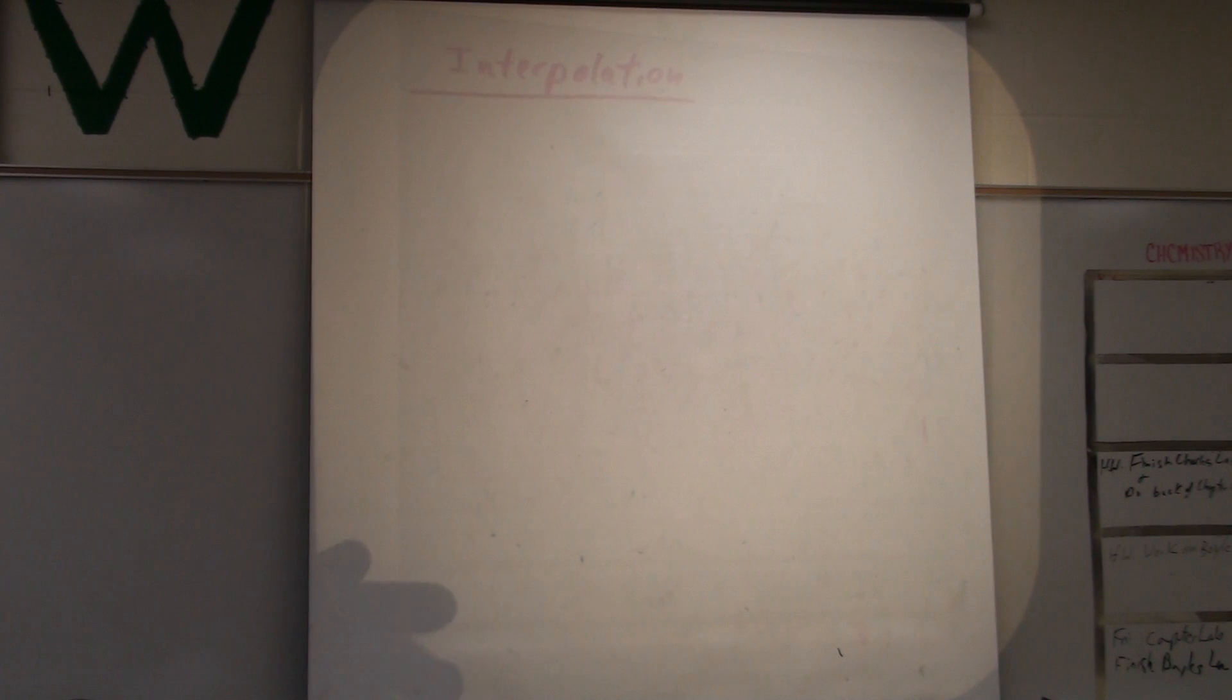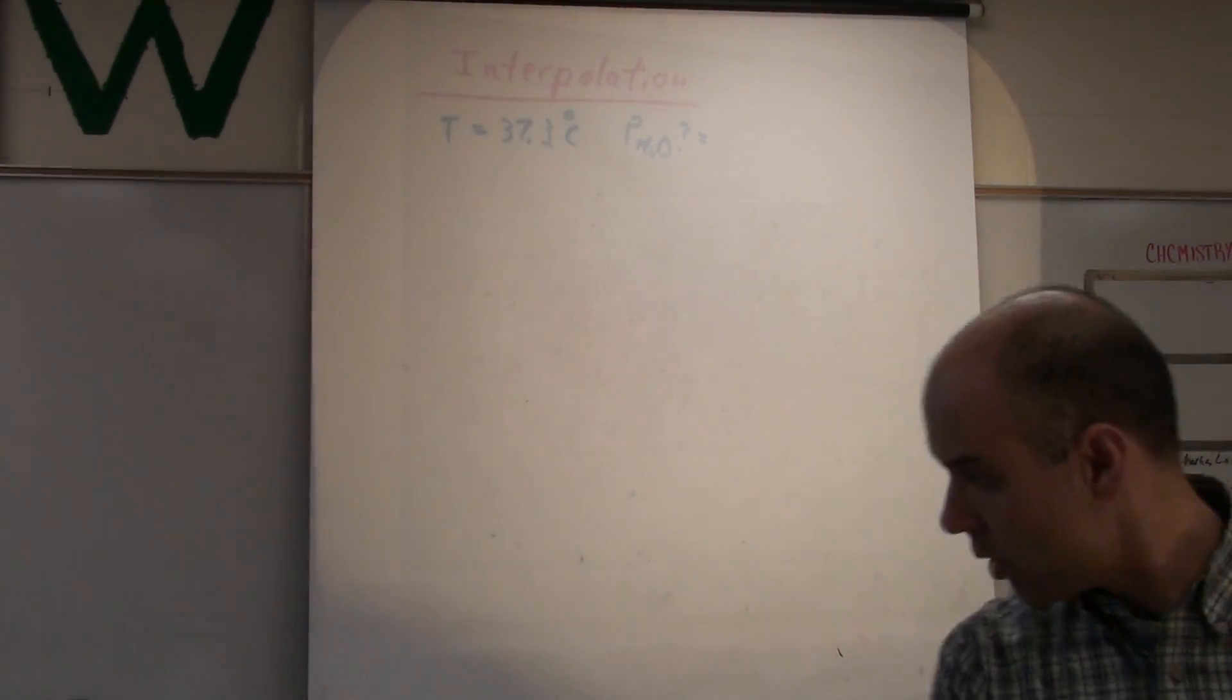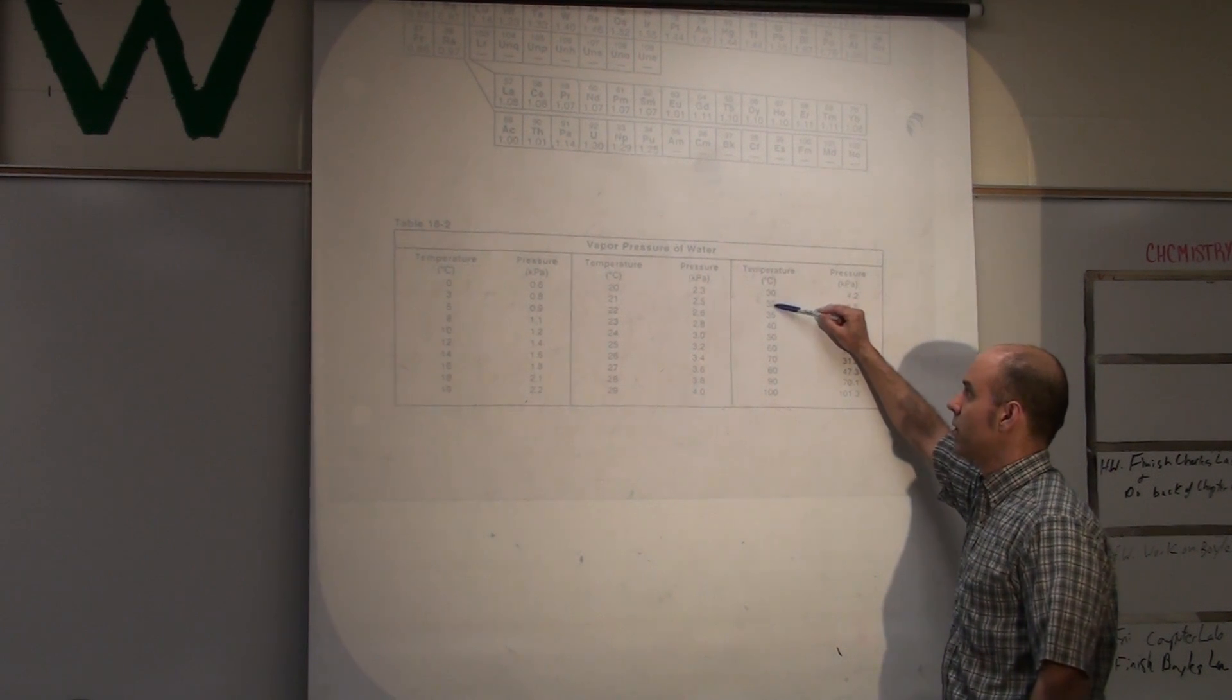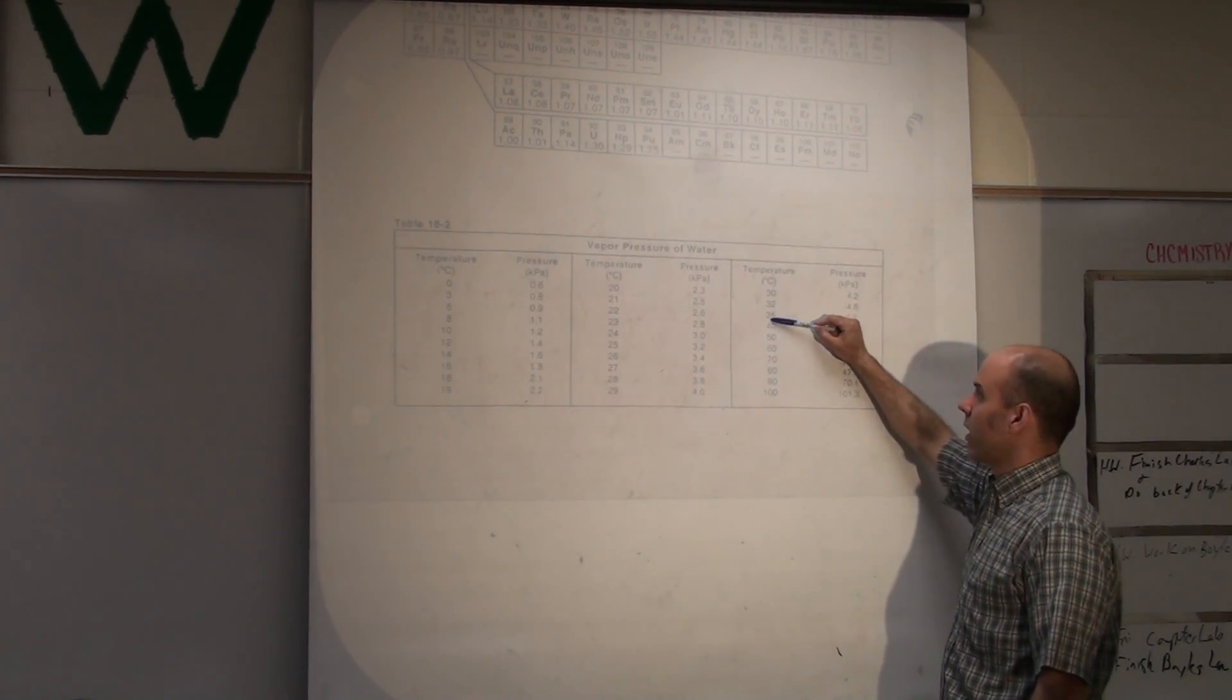Suppose I want to find the vapor pressure at a temperature of 37.3 degrees Celsius. That's my temperature and I want to find the vapor pressure of water. So, I go to my vapor pressure table. And the vapor pressure, I've got 30, 32, 35, 40. But I do not have 37.3 on here.